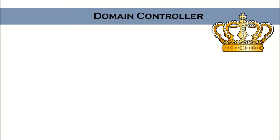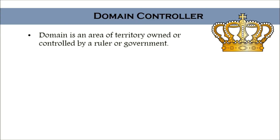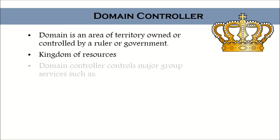A domain is an area of territory owned or controlled by a ruler or government. This is how we know it when people say 'I am the man of my domain.' So I'm a king of my kingdom. Basically, a domain controller could be referred to as a kingdom of resources — that's how a domain controller works.